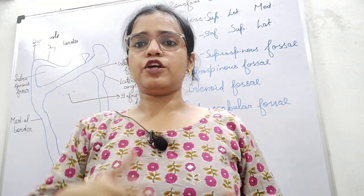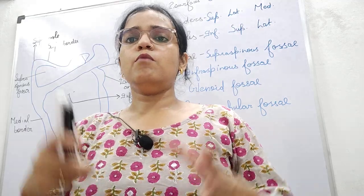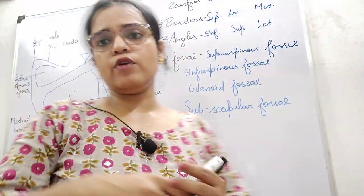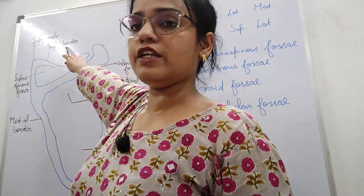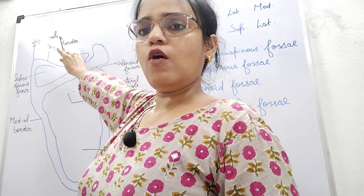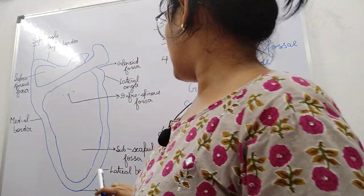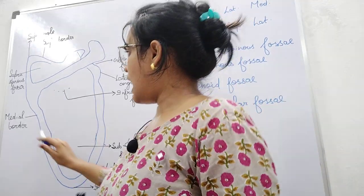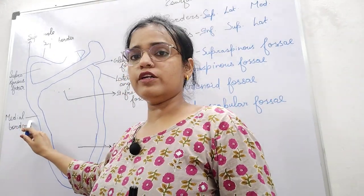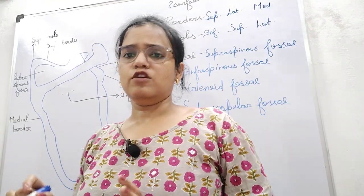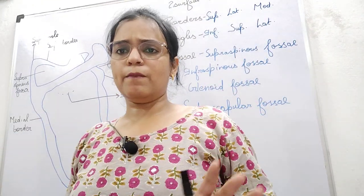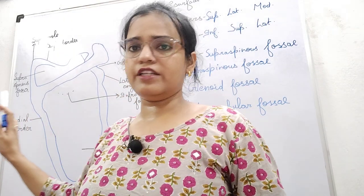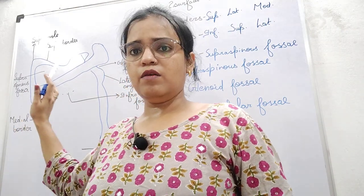Now we would be talking about the borders of the scapula. As you can see here, the superior border is on the superior side, the lateral border is on the lateral side, and the medial border is on the medial side. So there is no complexity in it — you can easily identify the borders.